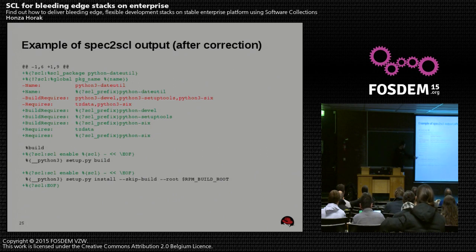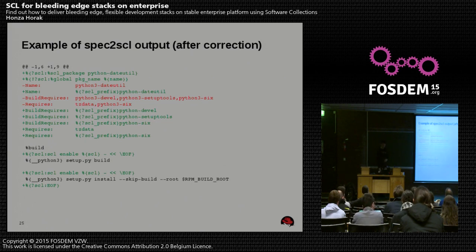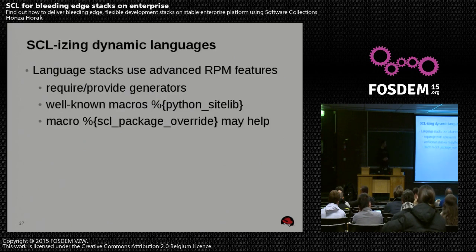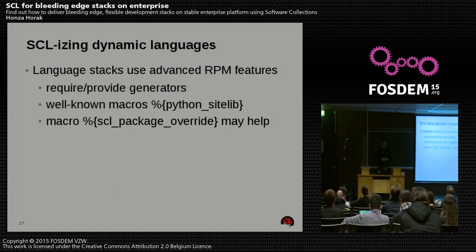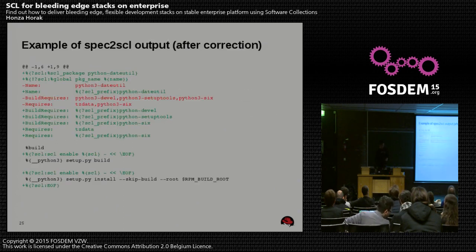This is also important for some packages where the build phase and the install phase need to run in the software collection environment — with the software collection enabled. Sometimes it requires a bit more, because for example the Python stack defines some macros that can be easily used — you need to care about macros defined by the Python devel package. But in the end you will end up with pretty much the same spec file. You can use the same macros, because they will already be changed in the Python 3.3 build package, for example.